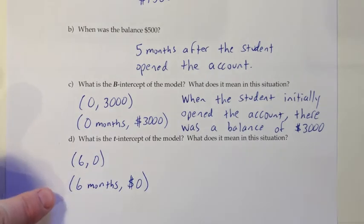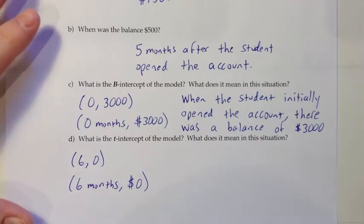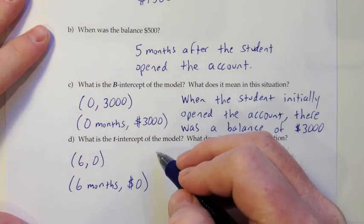So this isn't our interpretation, but just adding the units allows us to start thinking about it and try and come up with the wording that we want to use before we start writing our sentences. So $0 means that the student has run out of money, I suppose. And it looks like it took 6 months for that to happen. So 6 months after the student opened the account, their balance was 0 or they were out of money.